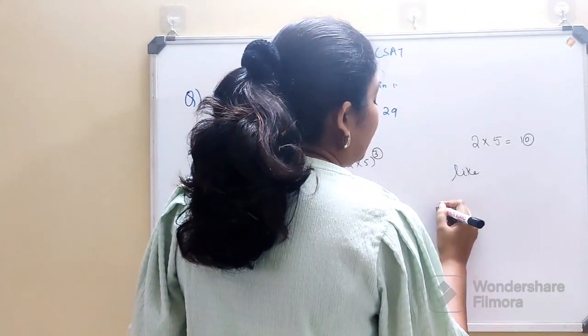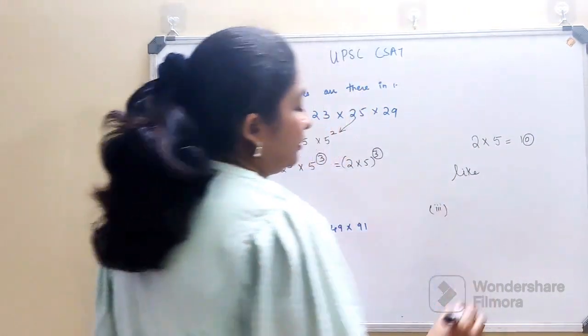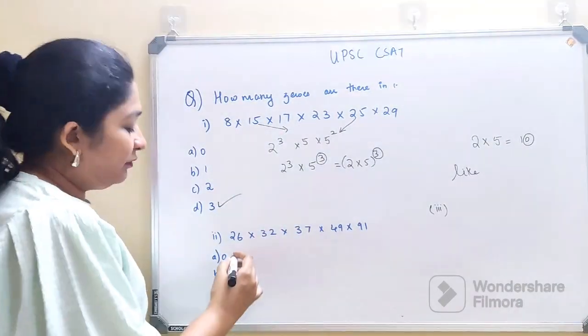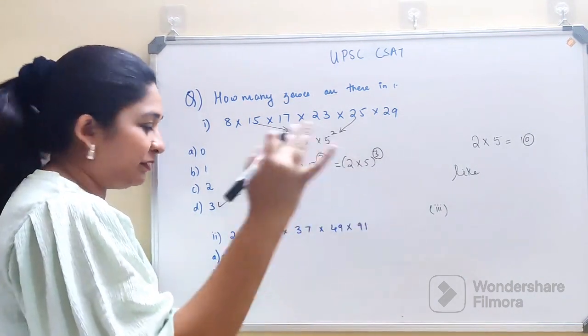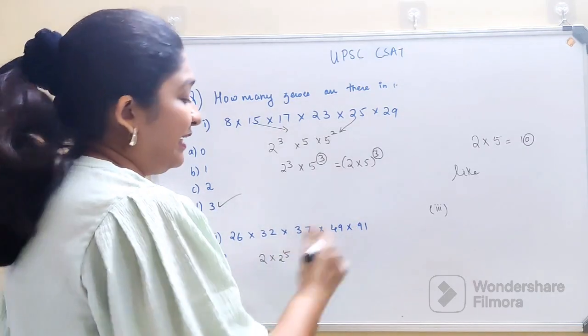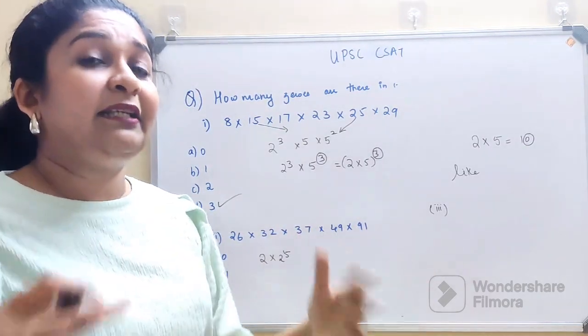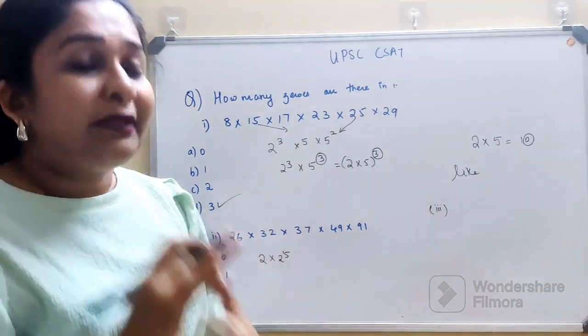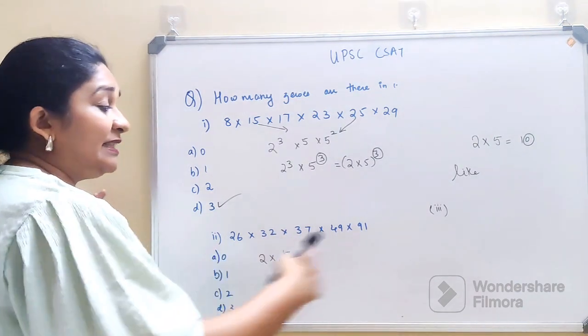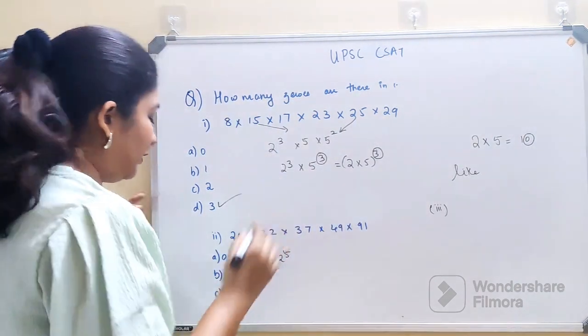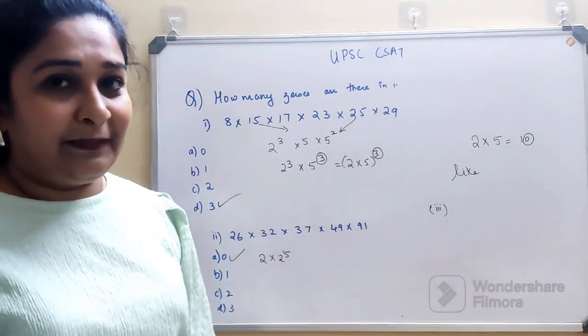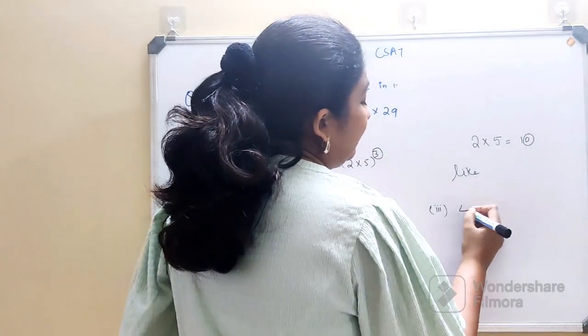Now if you look here, we have 2×13—we'll discard that. This 32 is 2^5. Now if you see, I'm not getting anything else in terms of 5. If I'm not getting anything in terms of 5, then I can simply say this particular multiplication will not have zeros. So here we'll have 0 zeros for this multiplication.